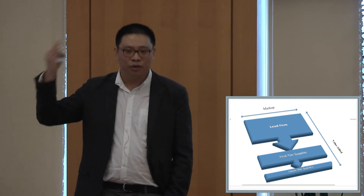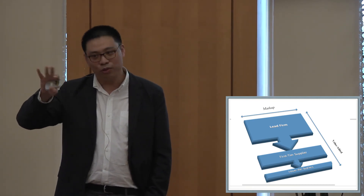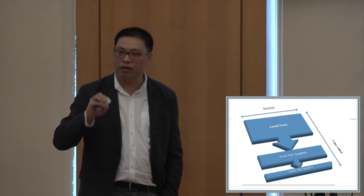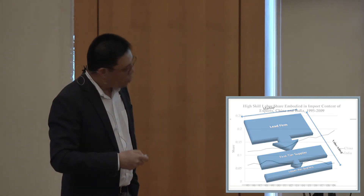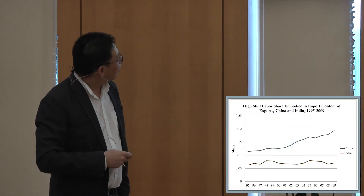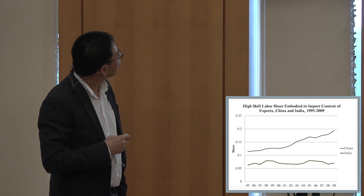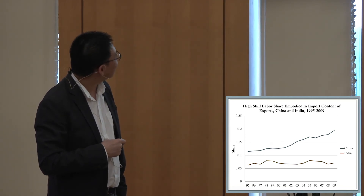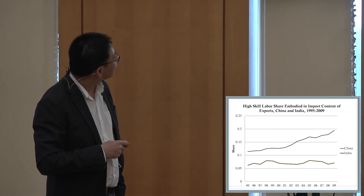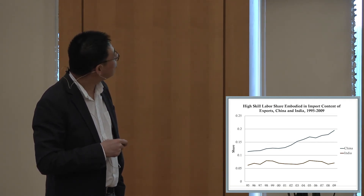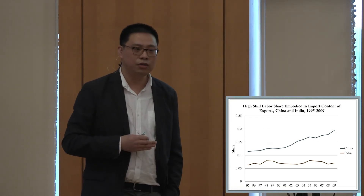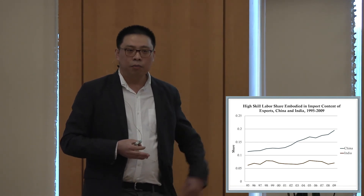I mentioned I was able to decompose each country's trade and extract the labor content by skill level. Using just two-country examples — China and India — looking at the high-skilled labor share embodied in the import content of export: China's high-skilled labor share embodied in import content of export has been increasing over time, whereas India's is pretty stable. Remember, China was the country that went through value-added erosion and India was the country that went through domestic-foreign substitution.